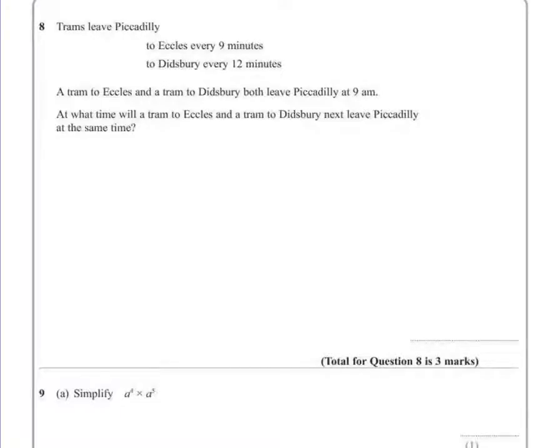Question 8. Trams leave Piccadilly to Eccles every 9 minutes, to Didsbury every 12 minutes. A tram to Eccles and a tram to Didsbury both leave Piccadilly at 9am. What time will a tram to Eccles and a tram to Didsbury next leave Piccadilly at the same time?